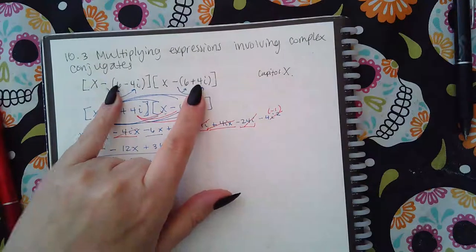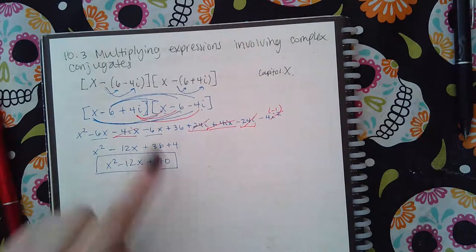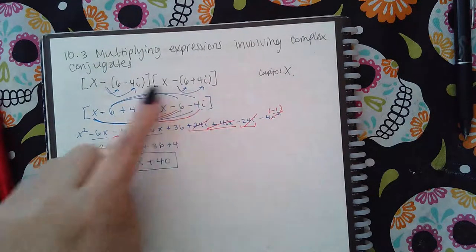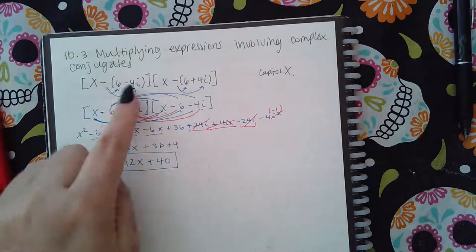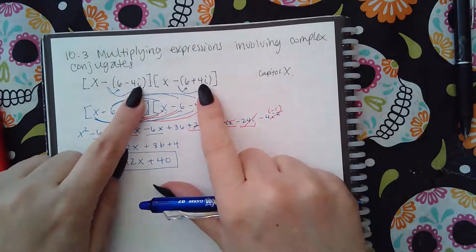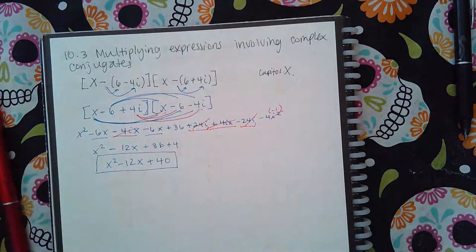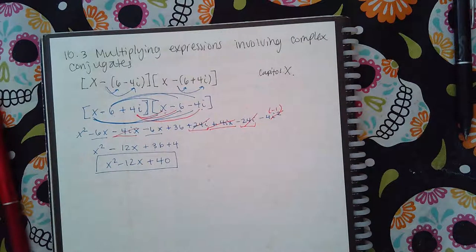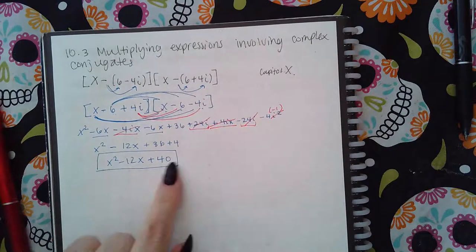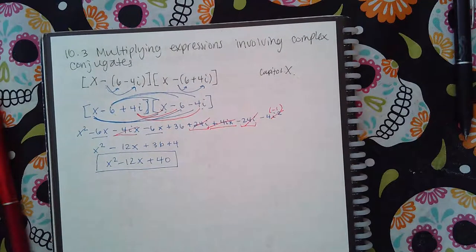So one thing to notice is that when you multiply two things that have imaginary numbers in it, if these two imaginary numbers are conjugates—meaning the same number in the front, same number in the back, just opposite signs in the middle—then what happens is after you multiply them together, you end up getting no more imaginaries in your polynomial. It just has real number coefficients.